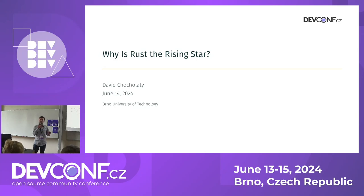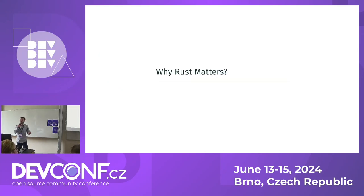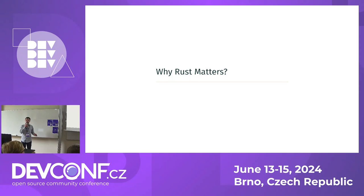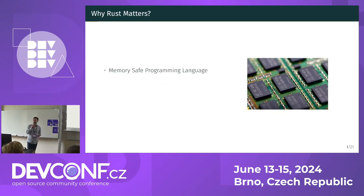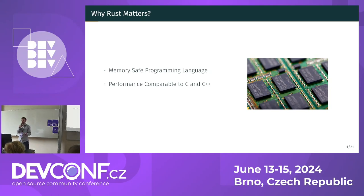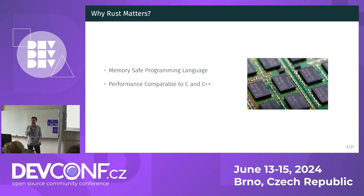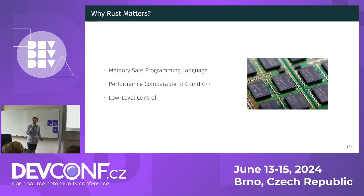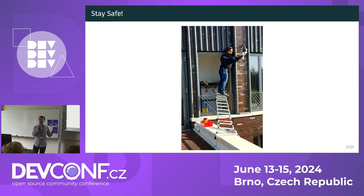We are going to start with the basic question: why does Rust matter? What makes it worth exploring and using? Firstly, Rust is known for being a memory-safe programming language. Rust offers performance comparable to C and C++ since it is a systems programming language that compiles to native code. It provides low-level control without sacrificing safety.